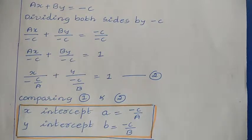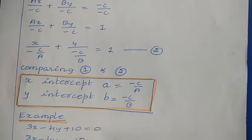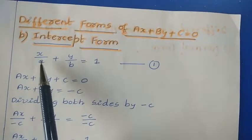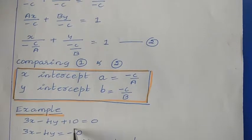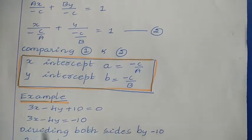Now let us see how to use these equations in a problem. Take the example: 3X minus 4Y plus 10 is equal to 0. We need to find the X intercept and Y intercept. First, represent this equation in intercept form. Taking 10 to the right hand side gives 3X minus 4Y is equal to minus 10.